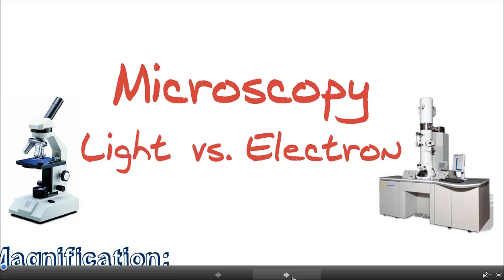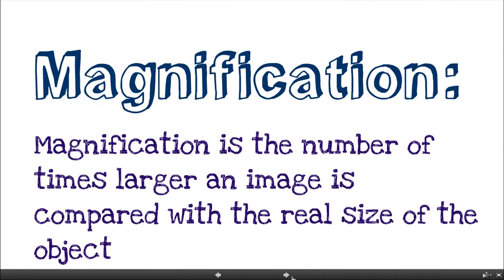So before we can really compare the two and get into that, we really need to go over a few key terms. So firstly, magnification. Magnification is just how many times bigger something appears. So when we look at something under low power or medium power, or go down to high power, each time it appears bigger, and the number of times bigger it is, that's basically the magnification.